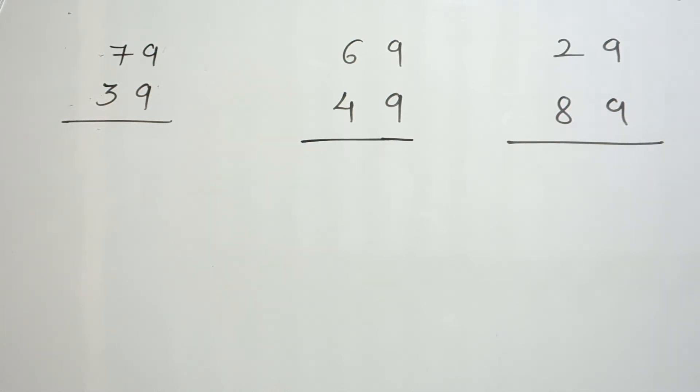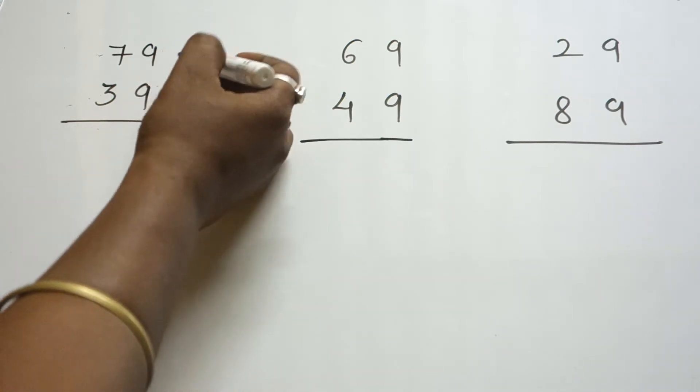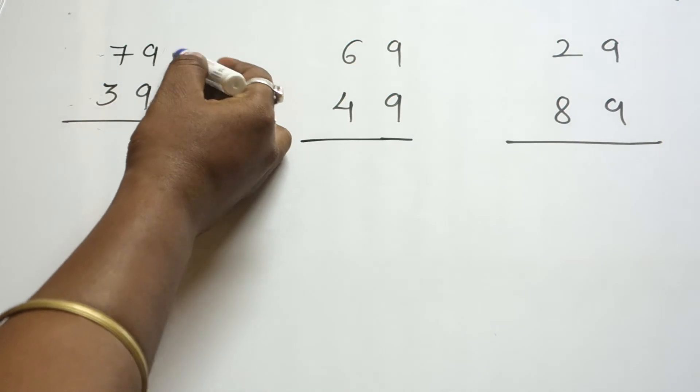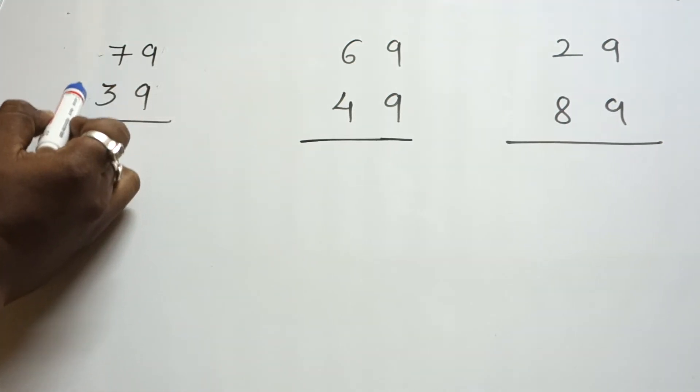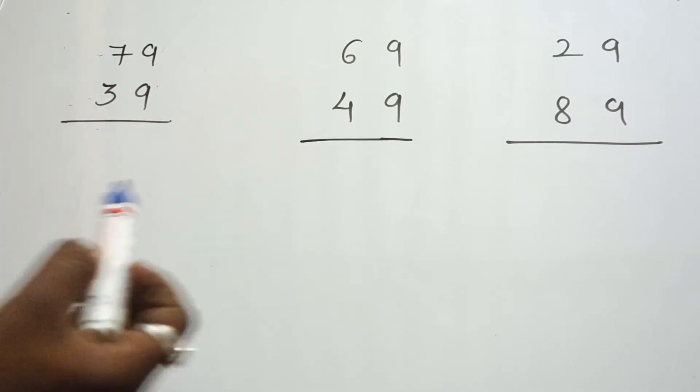Good morning everyone, again I'm back with some tricks. So now in this video we're going to see tricks to multiplying numbers when the unit place is 9 and the sum of tens place is equal to 10.